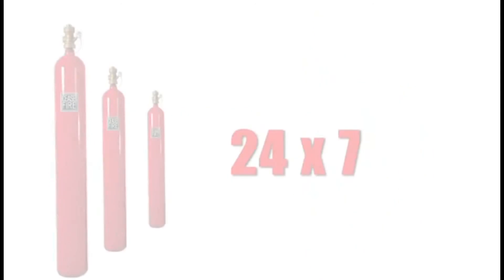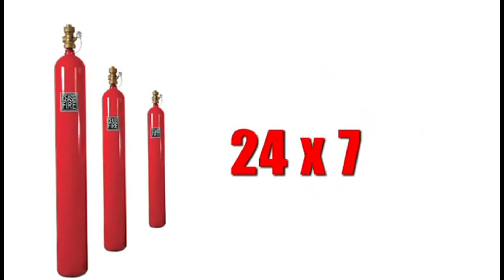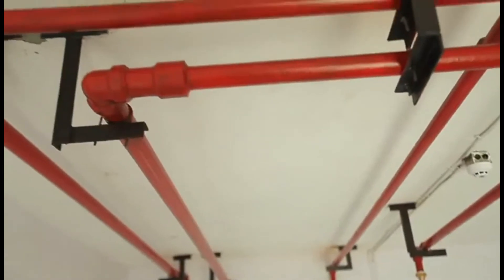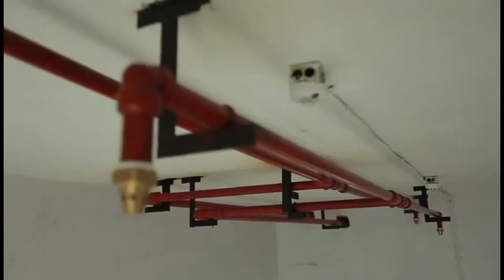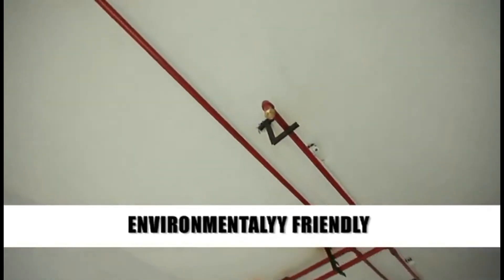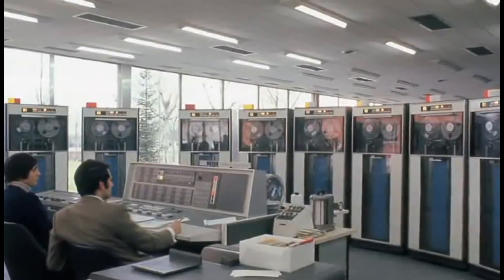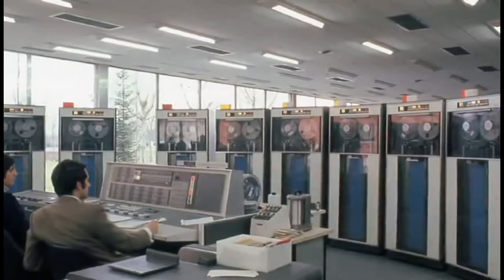The FM 200 system is on 24-7 and has extended reach on account of its customized piping network that can reach difficult to access areas. It's also environmentally friendly, people friendly and electrically non-conductive, making it safe to use on expensive electronic equipment. What's more, it's designed for speedy deployment and minimal downtime.